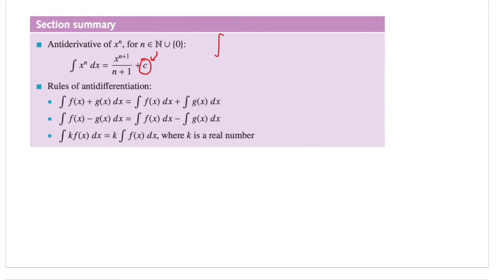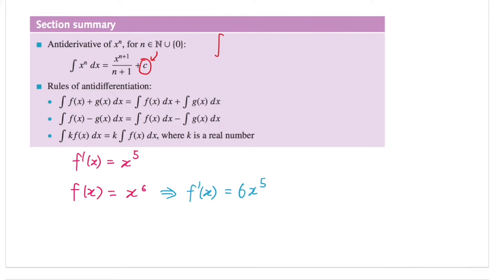Let's say we have a derivative function f'(x) = x⁵. To anti-differentiate it means we're going backwards — we should increase the power by 1, which becomes 6. So is x⁶ my answer? But if we try to derive this, f'(x) = 6x⁵, which is different from the derivative function given. Therefore, to anti-differentiate, we also need to take care of the coefficient. We need to multiply by 1/6 to make the coefficient become 1.